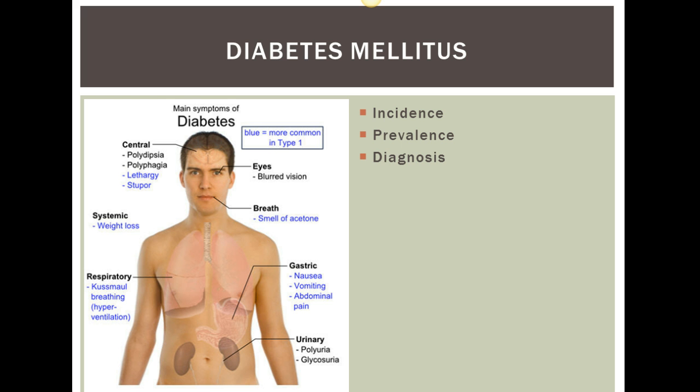Diabetes is diagnosed with a random blood sugar greater than 200, or also hemoglobin A1C. Hemoglobin A1C shows the glucose stored in hemoglobin, and it's a 120-day look-back period, which we know is the life of the red blood cell. With this test, we are seeing a look-back at sugar levels for that longer length of time.